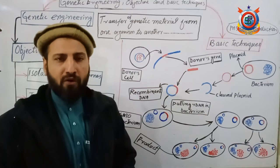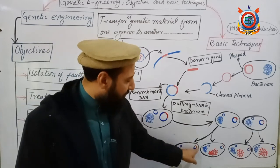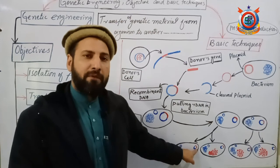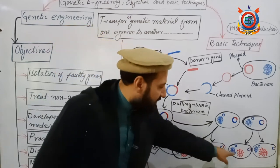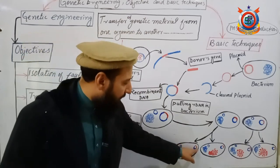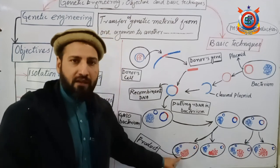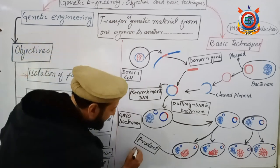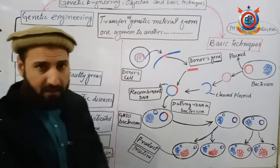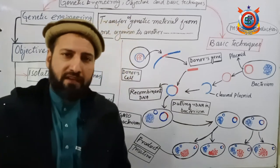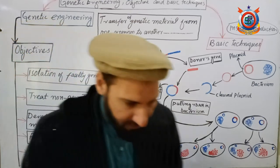Then protein synthesis begins inside the body of these genetically modified bacteria. When they synthesize proteins according to the human DNA gene we inserted, insulin production starts inside their bodies. The red color you see here represents the insulin produced with the help of this gene. When the gene is expressed inside, these proteins form and this is insulin. The insulin is then isolated, packaged, and sold in the market, where it is used as medicine for diabetic patients.